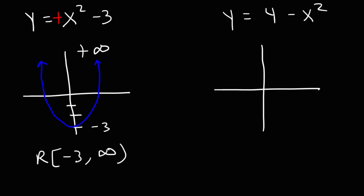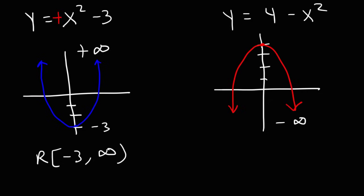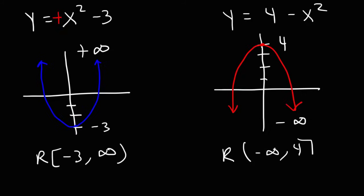For y equals 4 minus x squared, it's shifted up 4 units. Notice the negative sign in front of x squared, which means the graph opens in the downward direction. The lowest y value is negative infinity because it keeps going all the way down. The highest y value is 4, so the range is negative infinity to 4.